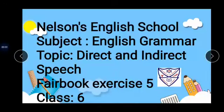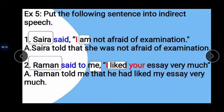Today we are going to continue with the same topic — direct and indirect speech — Exercise 5. In this exercise, the reporting verb 'said' is changed to 'told' if followed by an object; if there is no object, it is left unchanged. 'That' is used as a conjunction. Tenses, pronouns, and words denoting nearness are changed according to the rules already stated.